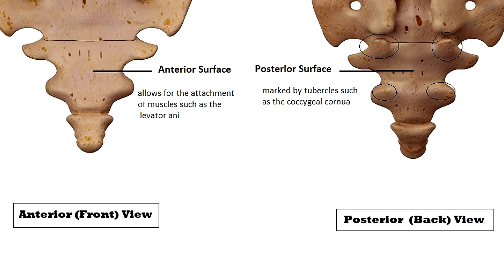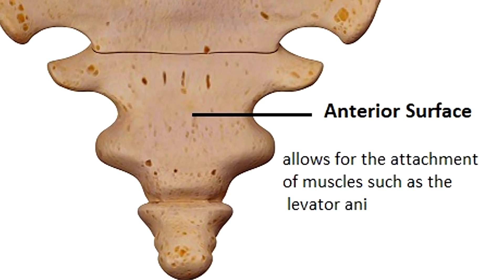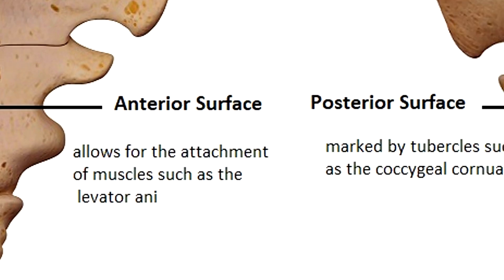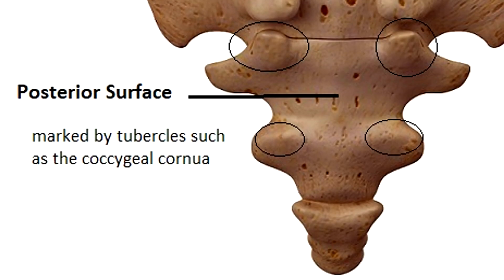The coccyx also has two surfaces. The anterior or front surface is concave or curved inwardly and it's grooved, allowing for the attachment of muscles such as the levator ani. There is also a posterior or back surface which is convex or curved outwardly and it's marked by several tubercles, the most prominent of which are the coccygeal cornua.